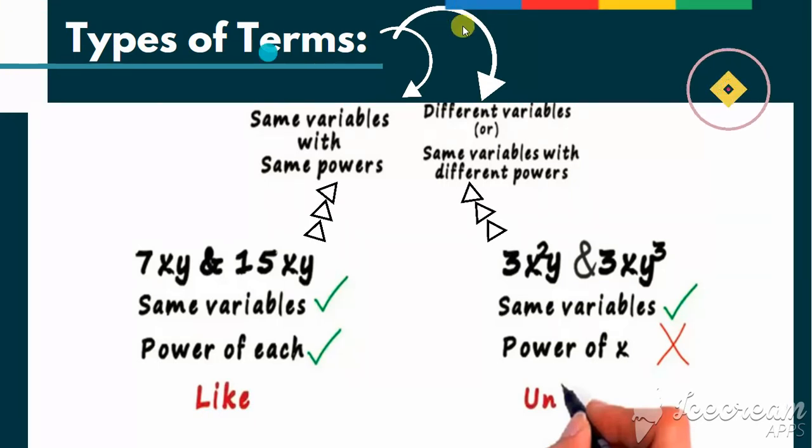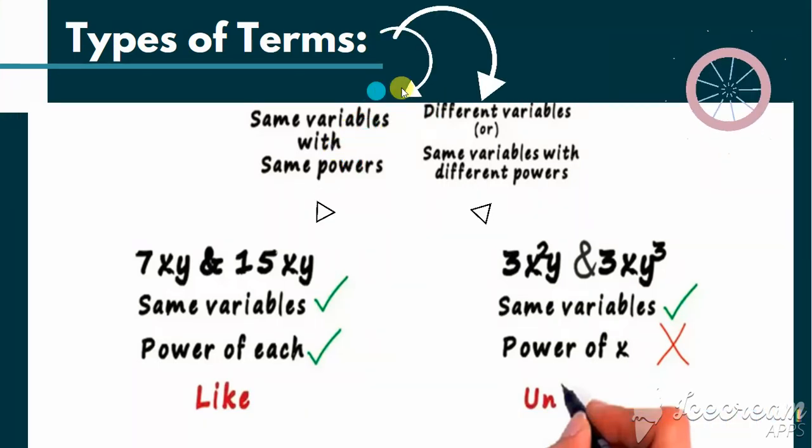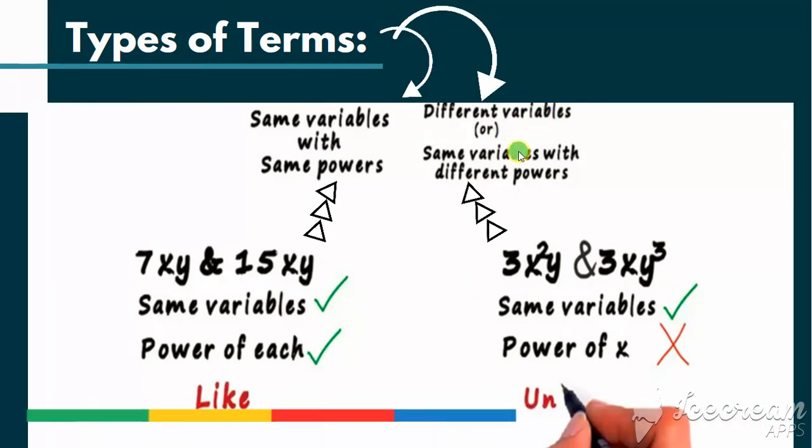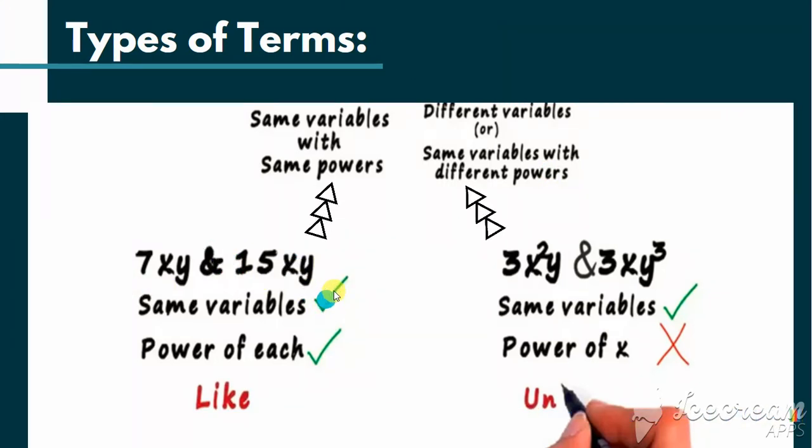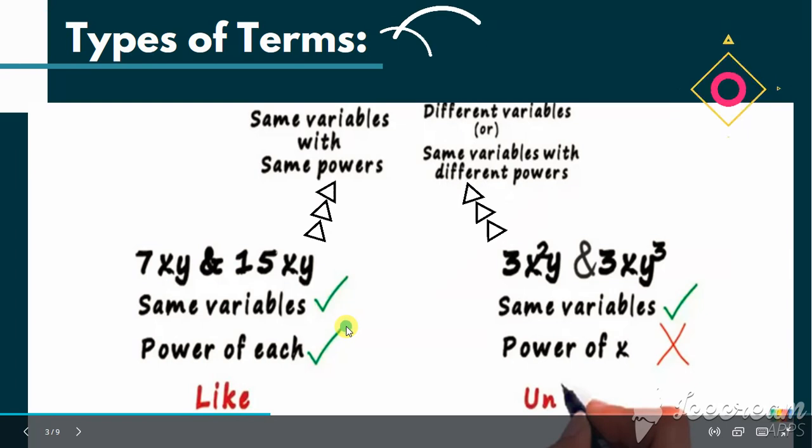Like terms have the same variables with the same powers. And unlike terms have the different variables or they may have the same variables but with the different powers. Let's see these terms. They have the same variables x and y and both have the power of each which is 1. So these are called the like terms.